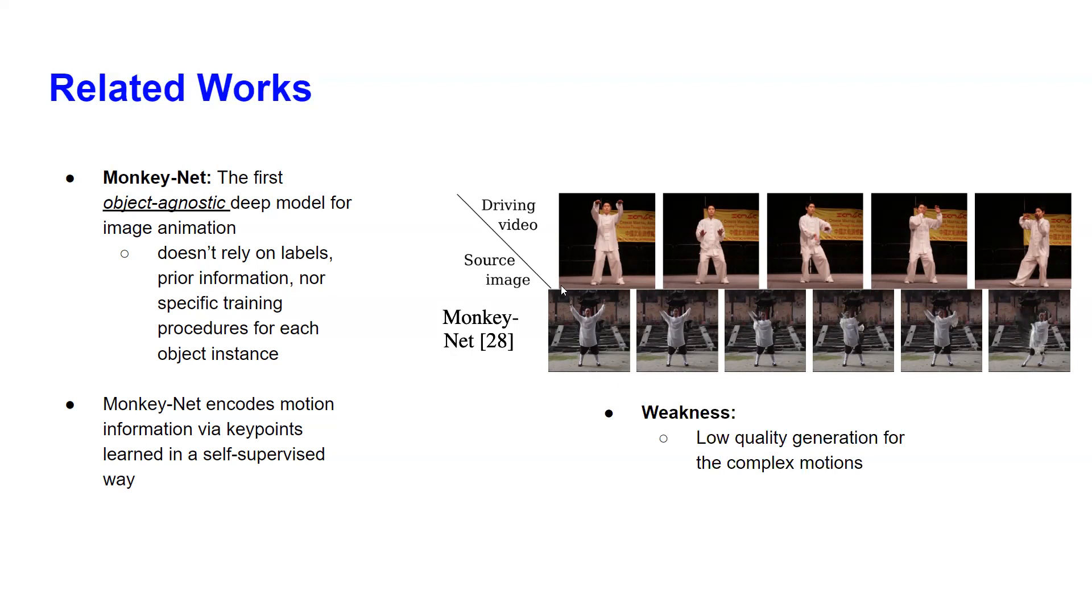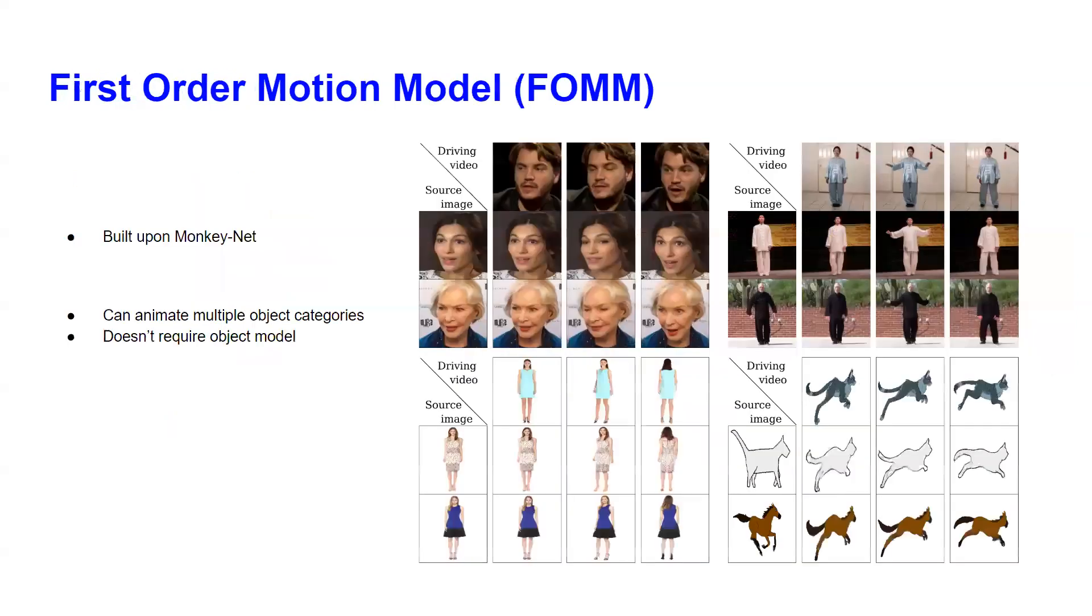This is the driving media and the source image. They look normal, but when the motion becomes a little bit bigger than just the front motion, it starts to generate some occlusions and the quality of the generated image becomes less and less going to the right. This is the main limitation of the MonkeyNet. Authors present first-order motion model, which is built upon MonkeyNet and can animate multiple object categories and doesn't require any object models to provide object-specific information.